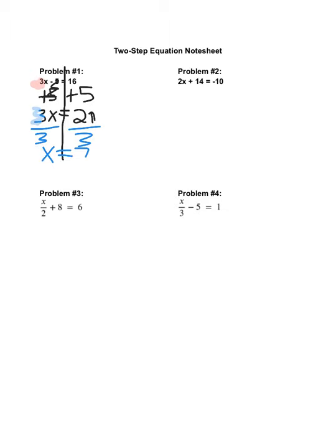Alright, so take a look at problem 2. You could pause the video now and try it on your own, and then check it. So once again, 2 and x are hooked together. Think about what else is on that side of the equation. That would be the positive 14. Since it's positive 14, I would need to subtract 14 from each side. So I have 2x equals, negative 14 is negative 24.